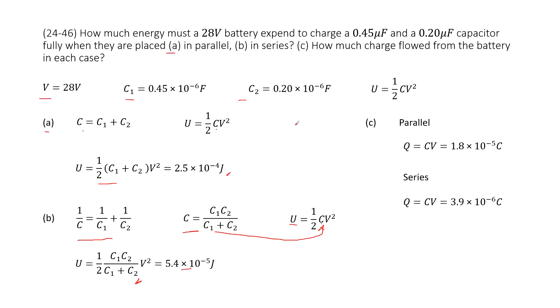The next one asks how much charge flows from the battery in each case. So in this case, we can see how much charge flows. That asks for the charge in this circuit. The charge in this circuit, we can consider as the capacitance times the potential difference V.